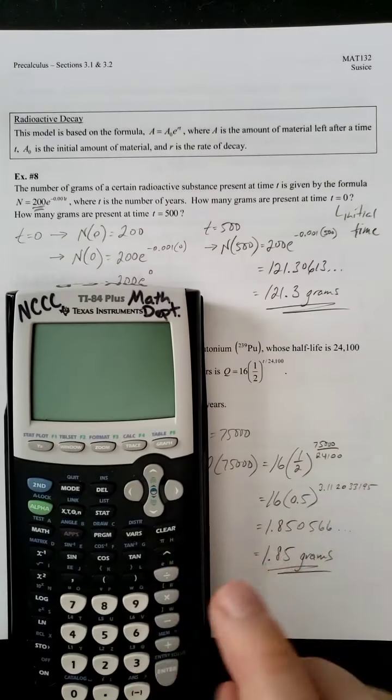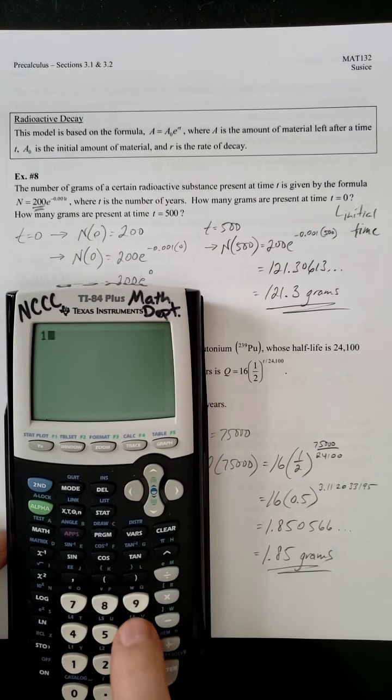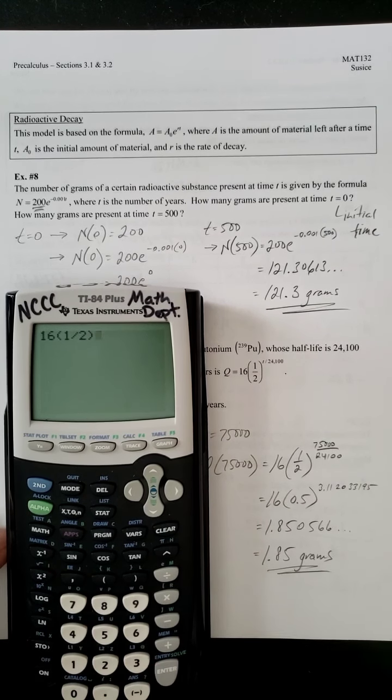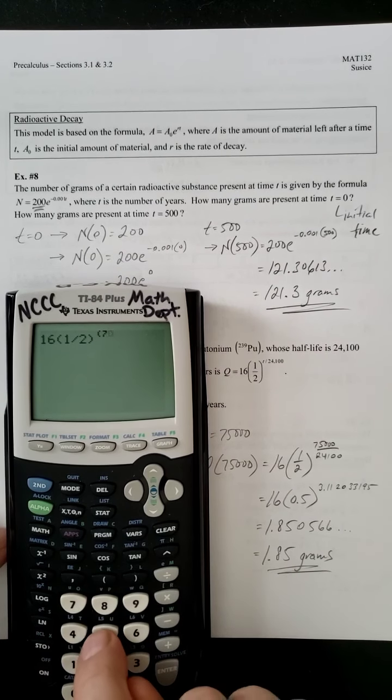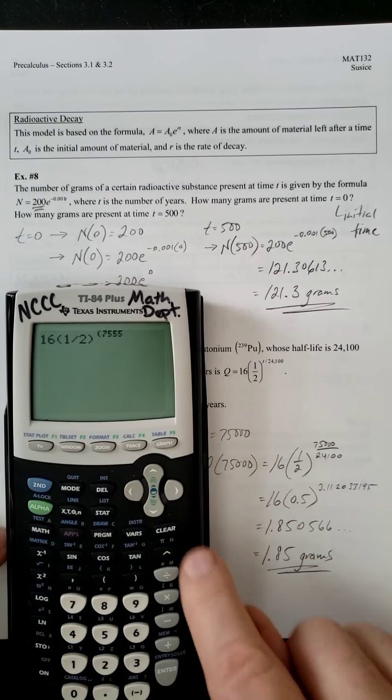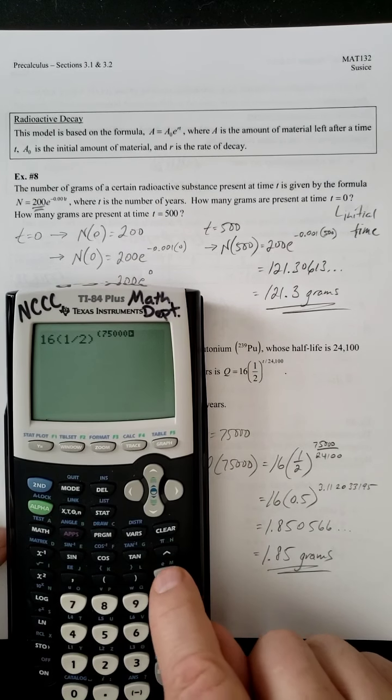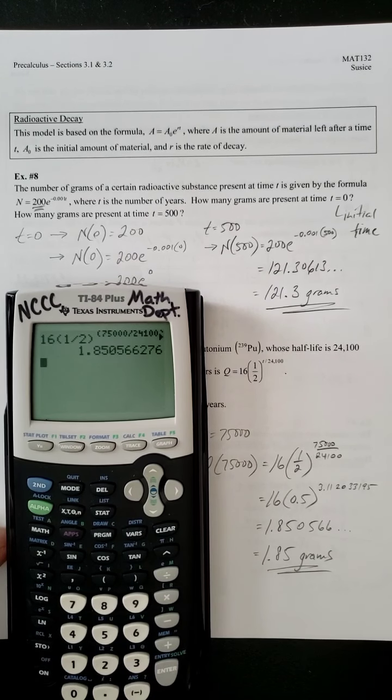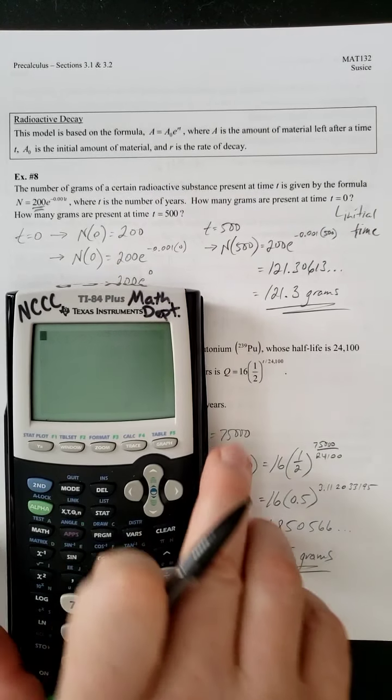And again, if you wanted to do it on a graphing calculator, it's going to be much, much easier, because you can just type everything in. You can even put the one half in there if you want. And then we want to raise it to, again, use your parentheses. Make sure you type it in correctly. Divided by 24,100. Close your parentheses. And there you have it. You get the same result.